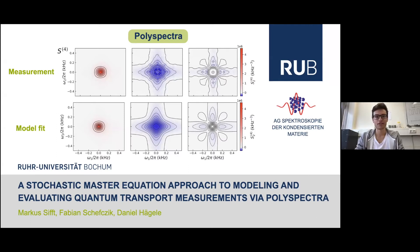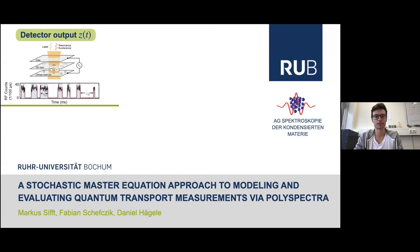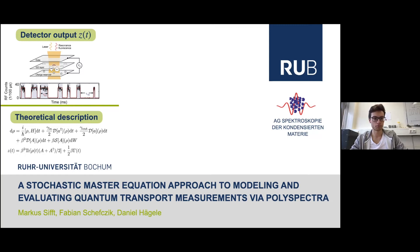Good morning everyone. I'm Marcus and this talk is about a novel method for analyzing the detector output z(t) for any quantum measurements, but here we will explicitly look at quantum transport measurements. I'm going to present the theory that the group of Daniel Hegel developed, which is able to bridge the gap between any detector output z(t) from a quantum measurement and the description of the underlying system, for example the stochastic master equation, without any compromises.